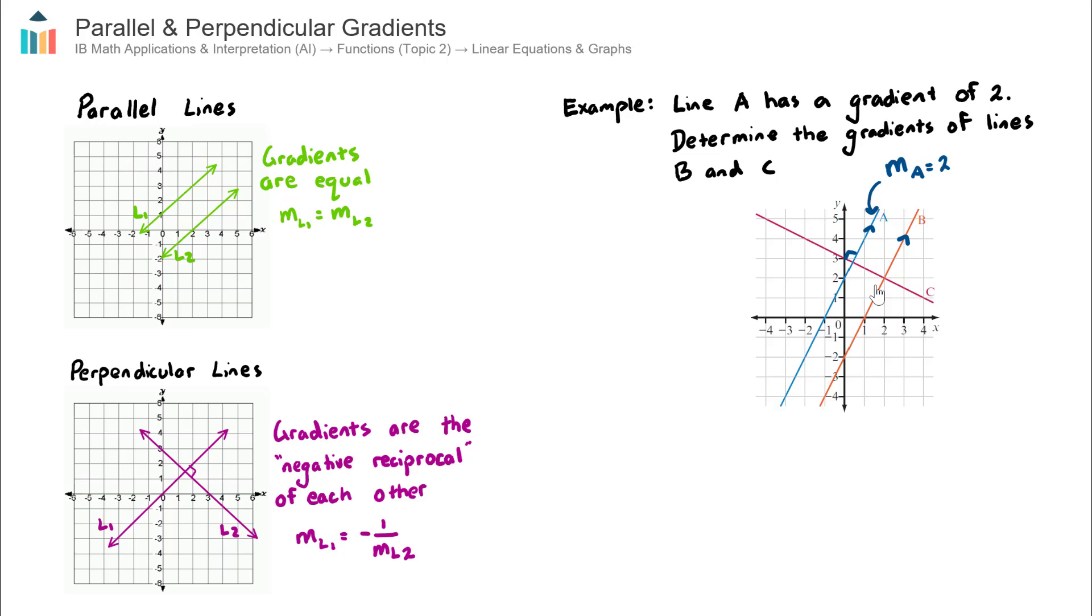Let's firstly start with the easy one, the gradient of line B. So the gradient of line B, because line B is parallel to line A, the gradient of line B will equal the gradient of line A. So therefore the gradient of line B is going to equal 2.